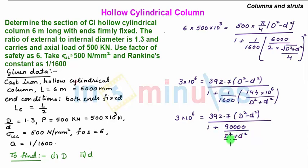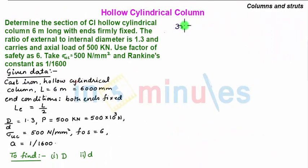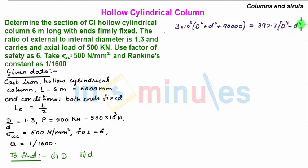Cross multiplying and rearranging, we get 3 into 10 to the power 6 is equal to 392.7 into capital D square minus small d square into capital D square plus small d square, the whole upon capital D square plus small d square plus 90000. Taking this term to the left side: 3 into 10 to the power 6 into capital D square plus small d square plus 90000 is equal to 392.7 into capital D to the power 4 minus small d to the power 4.